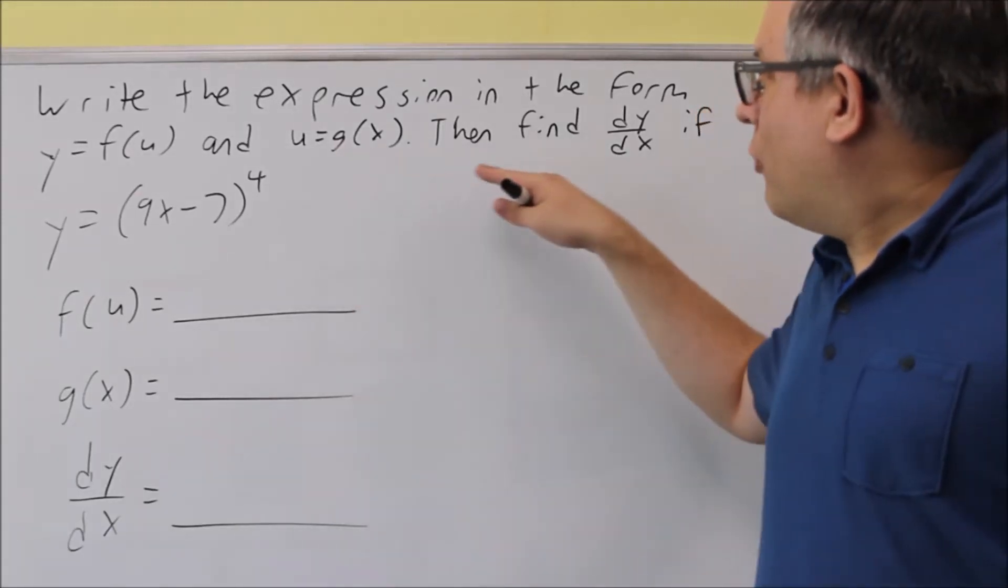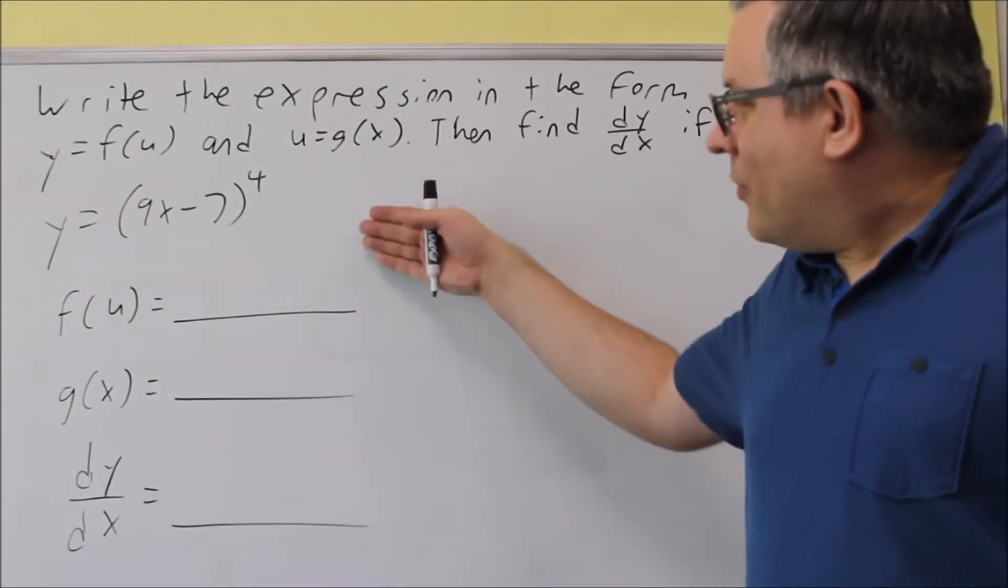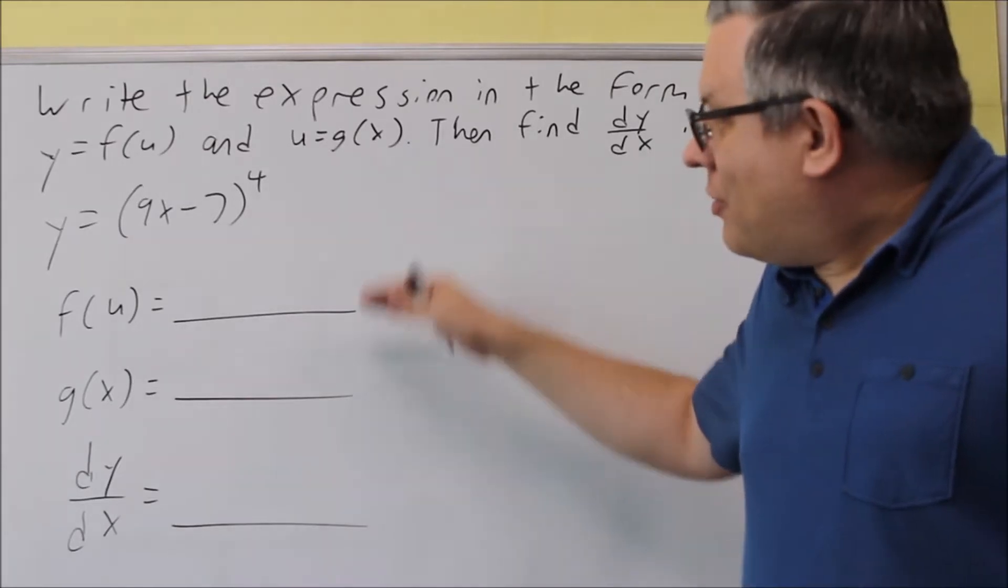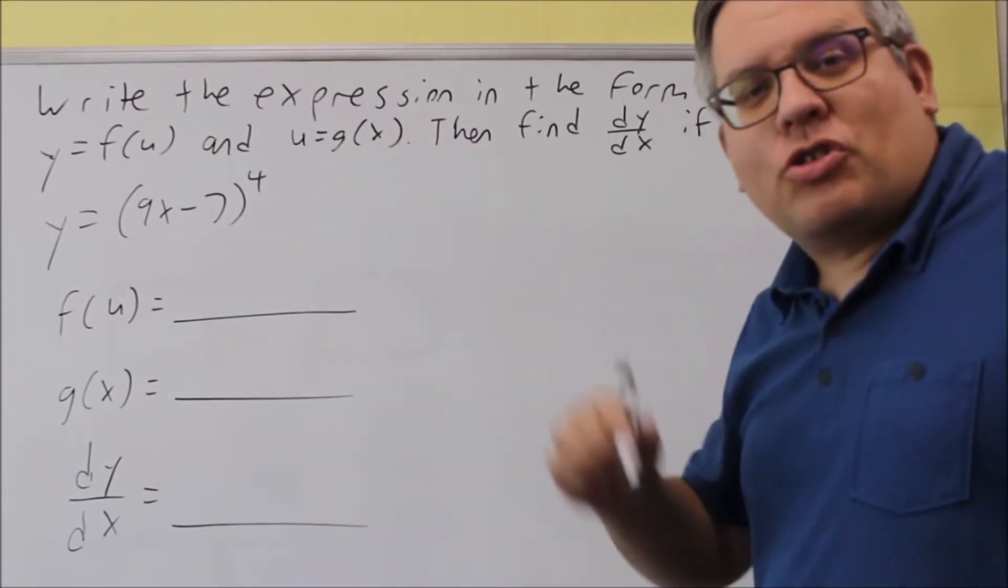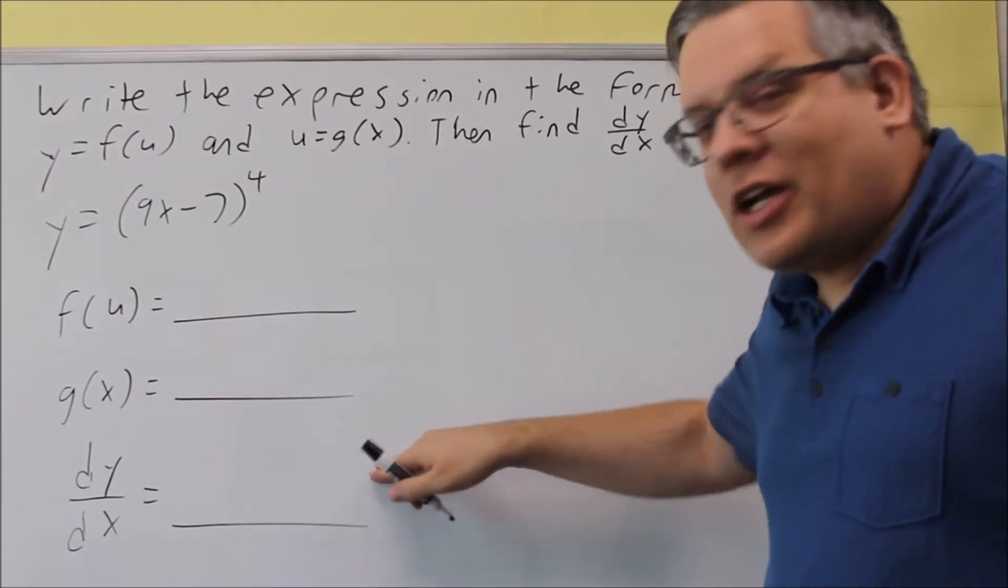Okay, for this problem, they want us to write the two functions that form this: y equals (9x minus 7) to the fourth, and then we're going to use the chain rule formula in order to find the derivative.